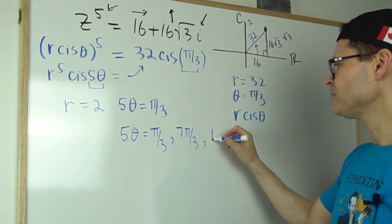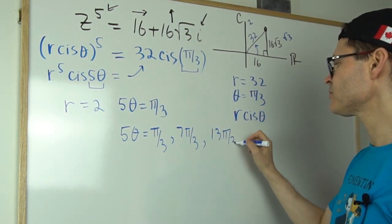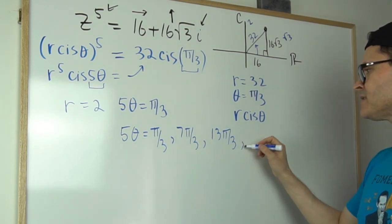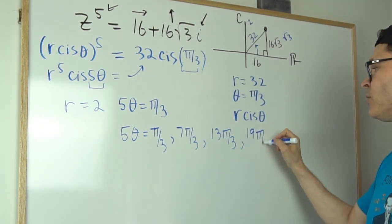And then I'll add 6 again. That'll give me 13π over 3. And then I add 6 again. That gives me 19π over 3.